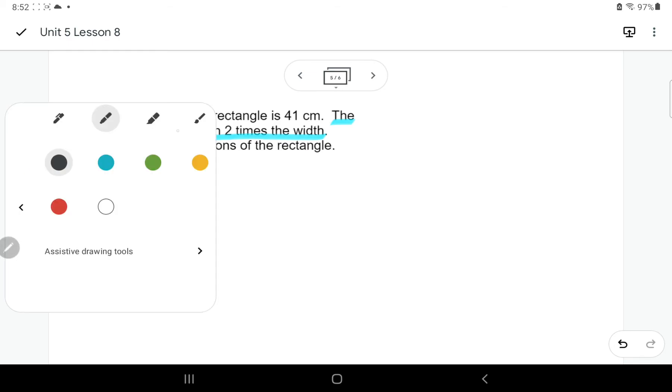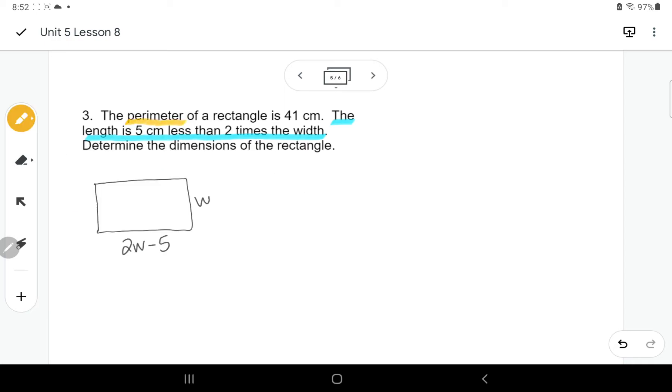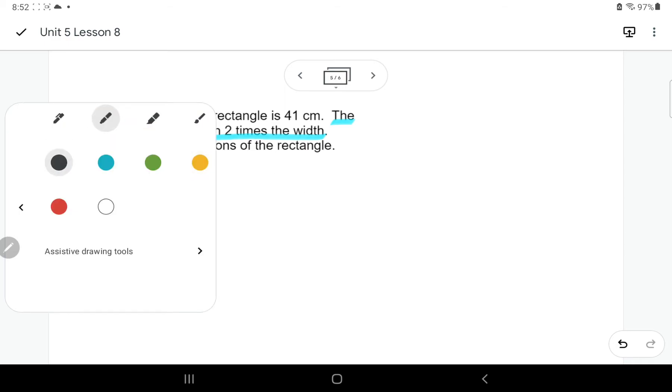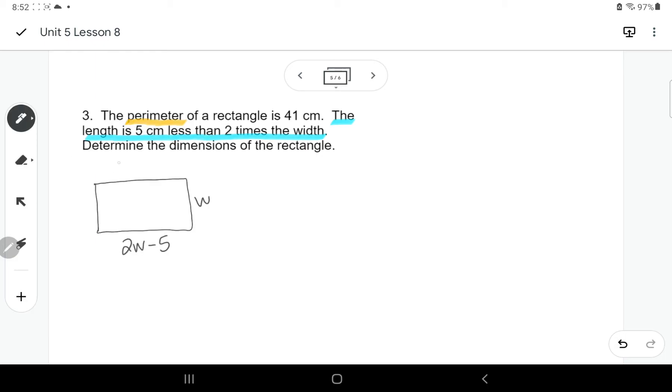Hopefully that diagram looks okay to you. Then I noticed that I'm looking for perimeter. So here I'm going to label all of my sides. They would be the same on each side. And I know that perimeter for a rectangle, I'm just going to add up all four sides. So W plus 2W minus 5 plus W again, plus 2W minus 5. And that would add up to 41. So now we're just going to go ahead and solve.